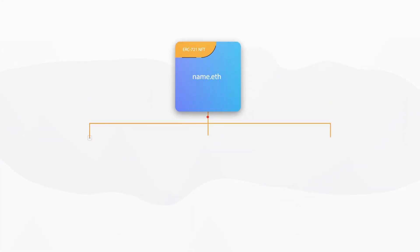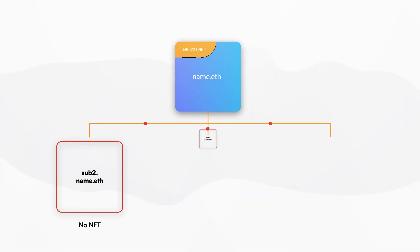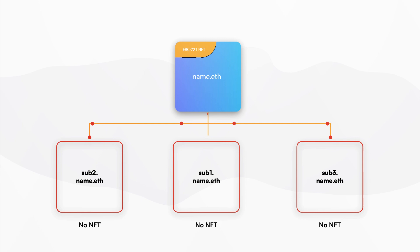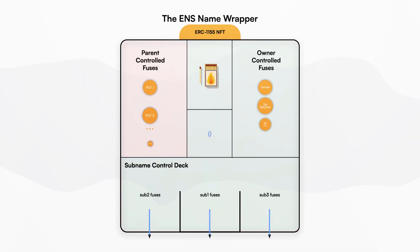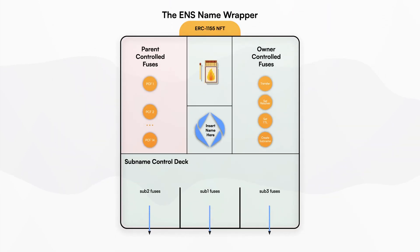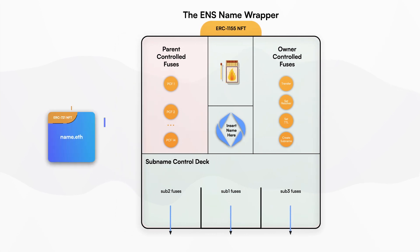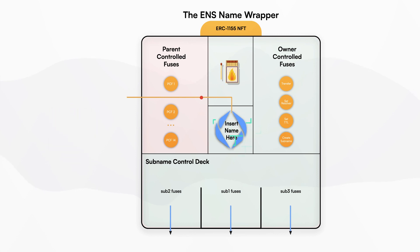Before the ENS Name Wrapper, you could already create subnames underneath your ENS name. However, although your ETH second level name is an NFT, those subnames were not yet NFTs. The ENS Name Wrapper wraps any ENS name into a fully-fledged ERC-1155 NFT. You can take your ETH name and turn it into a wrapped ERC-1155 NFT.